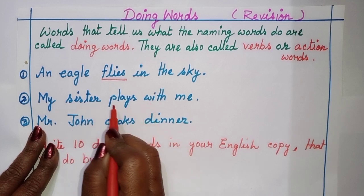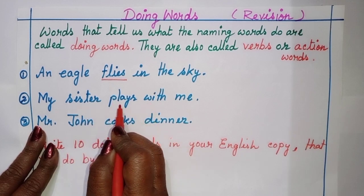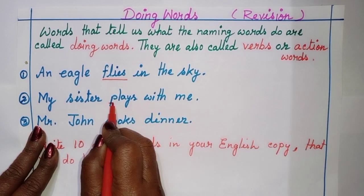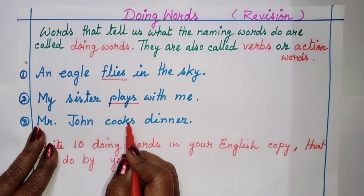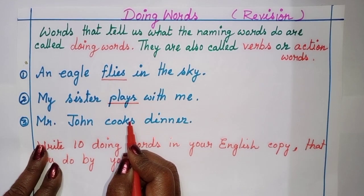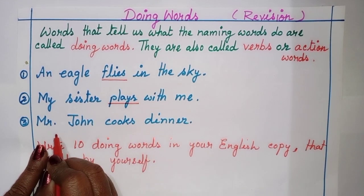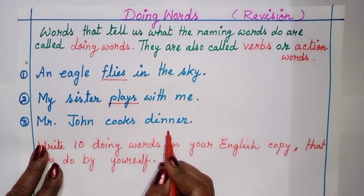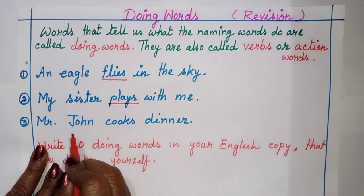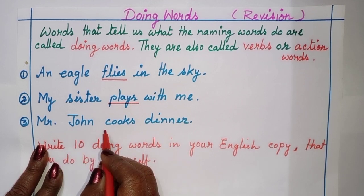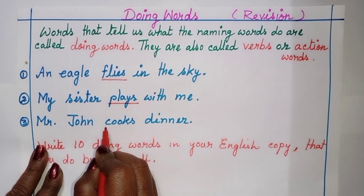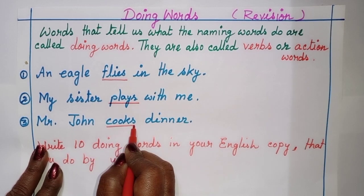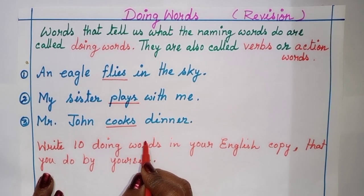My sister plays with me — so what is my sister doing? She plays, so 'plays' is a doing word. It is very easy. Another example: Mr. John cooks dinner — Mr. John is cooking the dinner, so 'cooks' is the doing word.